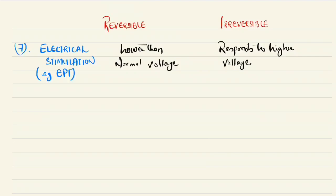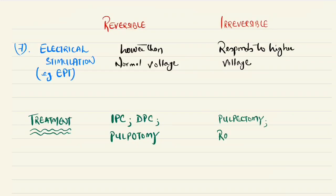So what are the treatments that has to be done when we have identified that it is reversible or irreversible? For reversible cases we do indirect pulp capping, direct pulp capping, or pulpotomy, while in irreversible cases we do pulpectomy, root canal treatment, RCTs, or extraction of the tooth.